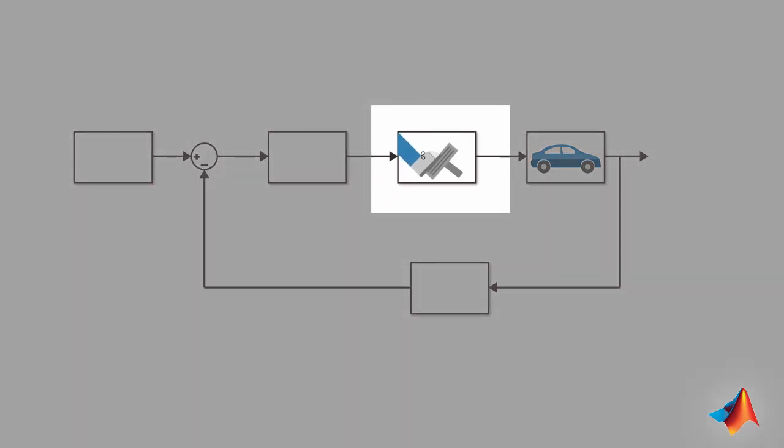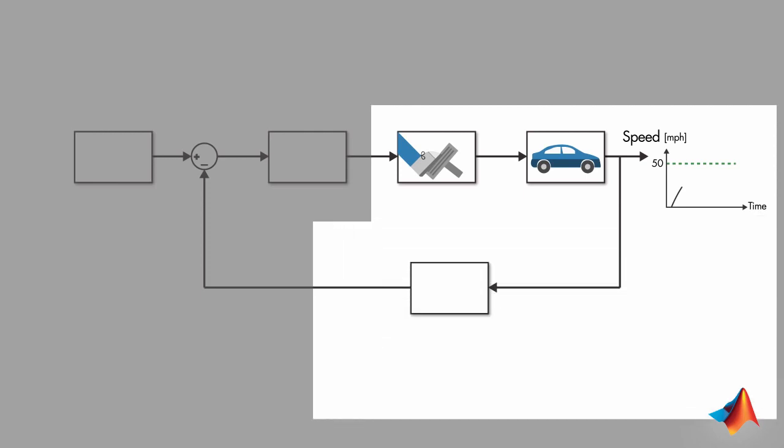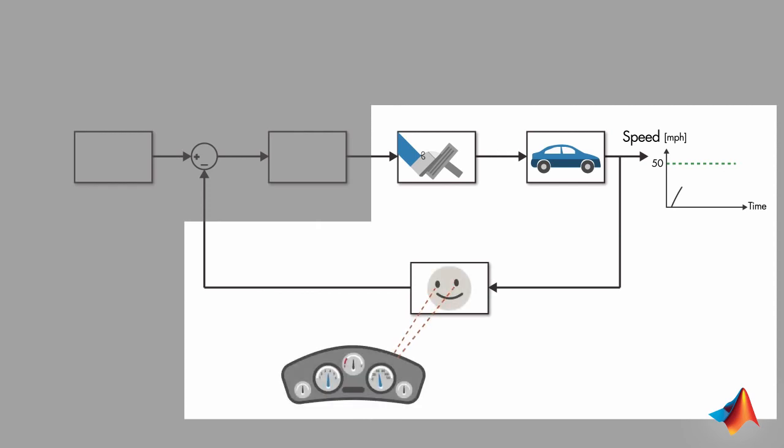When you step on the gas pedal, your car's speed starts to change. You know that you want to be going 50 mph. Let's show your desired speed on the plot with green. Notice that it remains constant over time. Next, you look at the speedometer to see at what speed you are. Let's show the monitored speed on this plot.